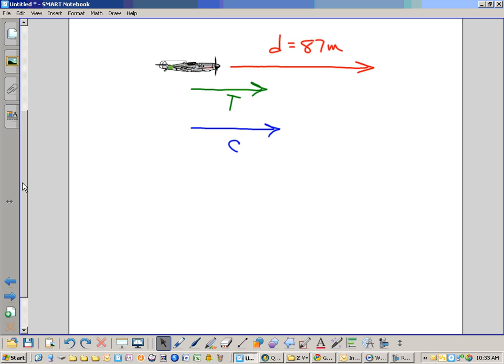All right, we also have, at the end of the situation, we are given a kinetic energy. All right, so what do we know about work and kinetic energy, the relationship between them? Assuming that the plane starts from rest, we know that work is equal to, this is the net work, which is the work done by T and C. Work is equal to change in kinetic energy.